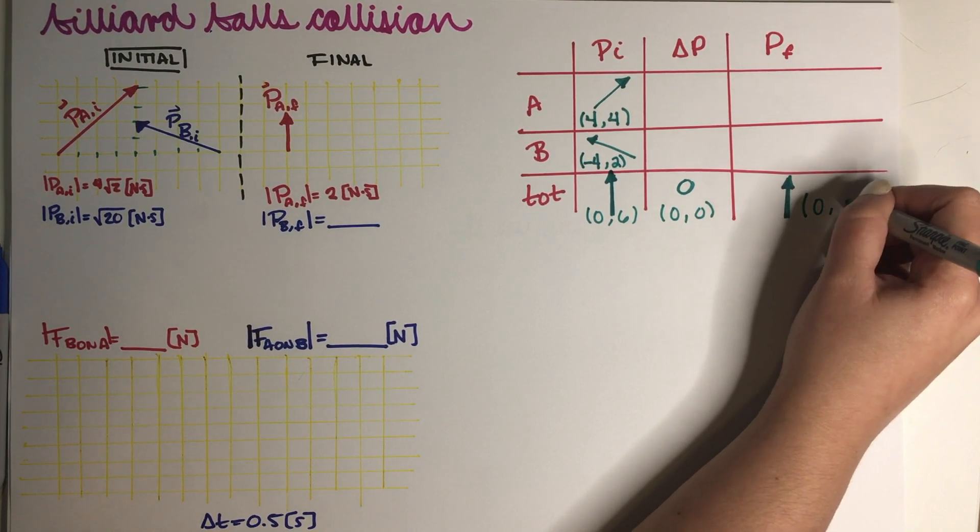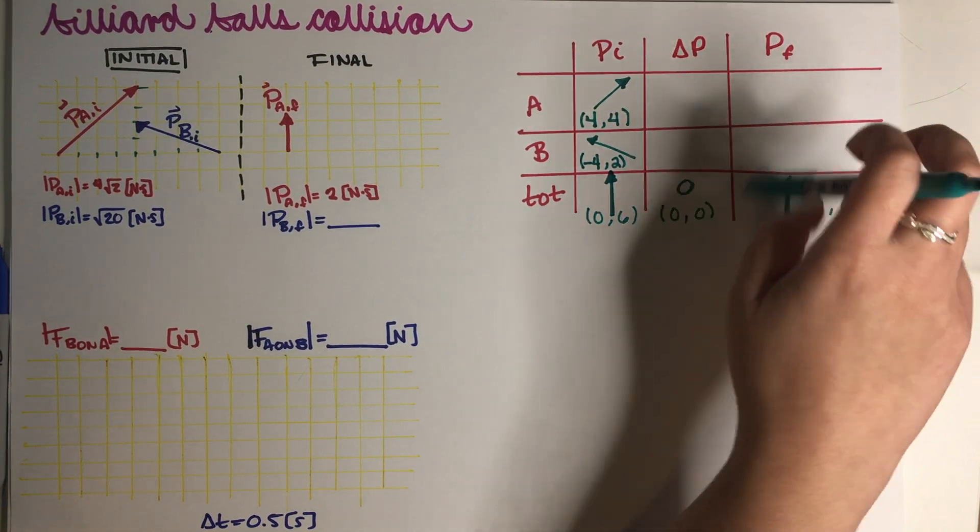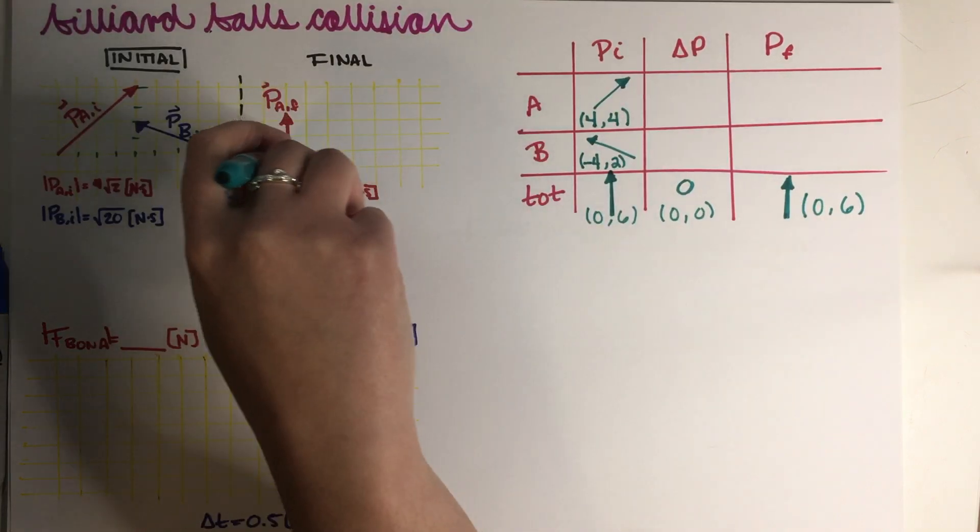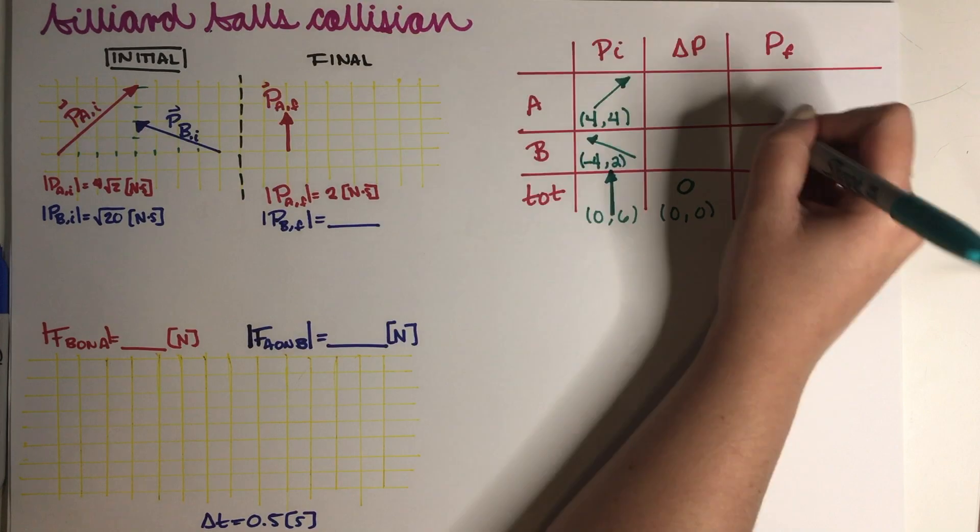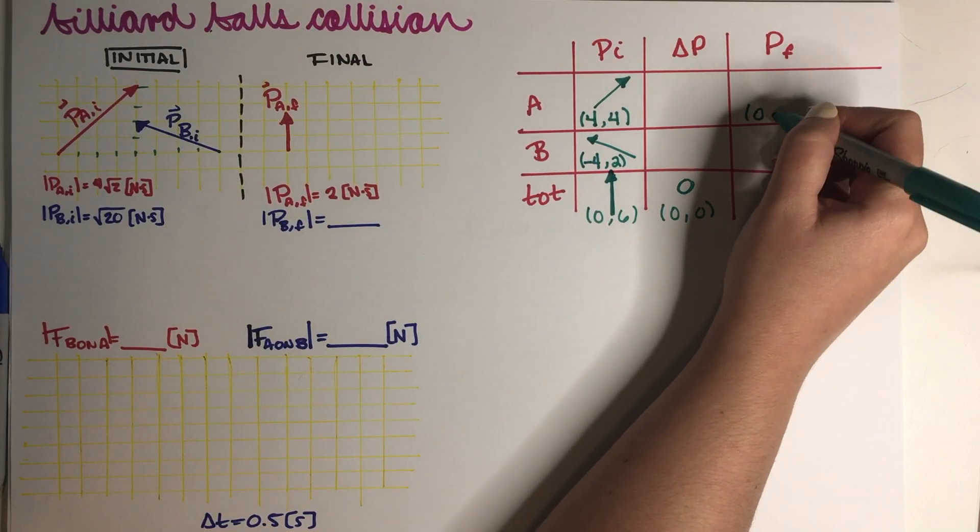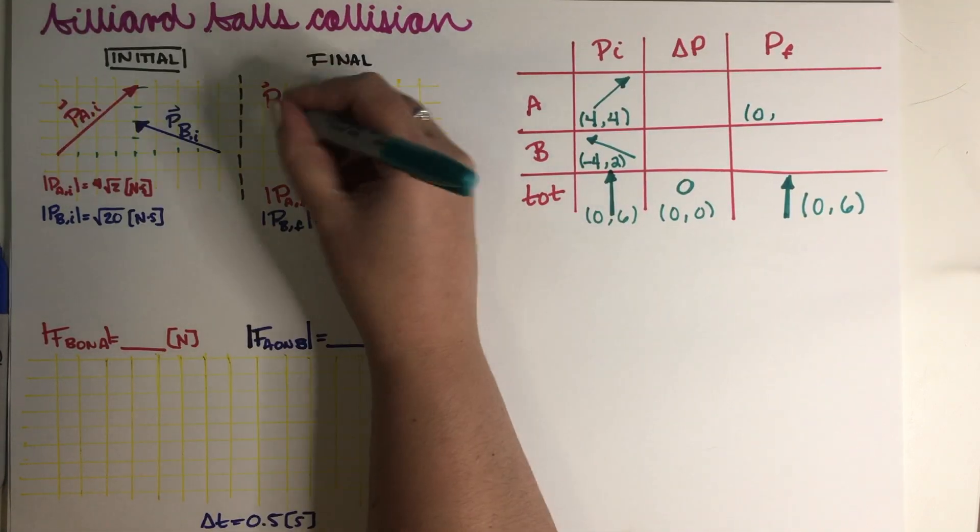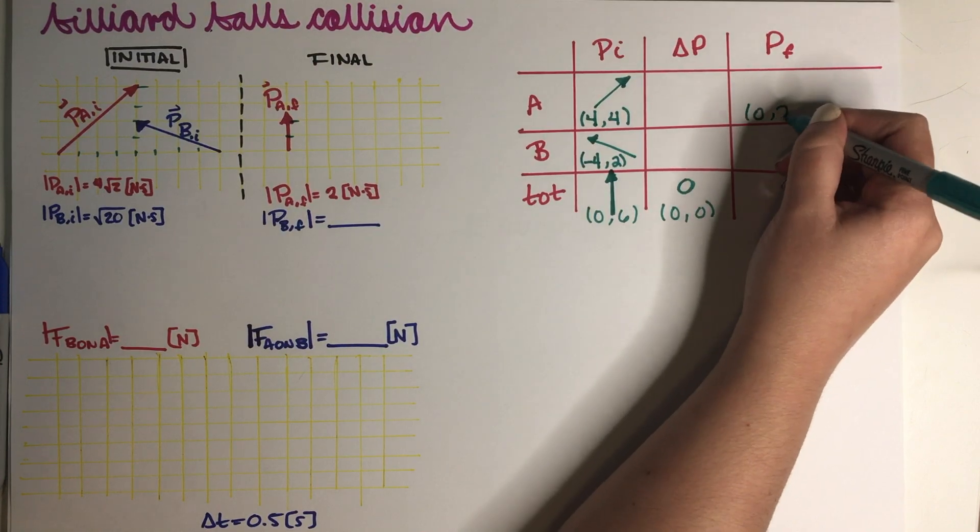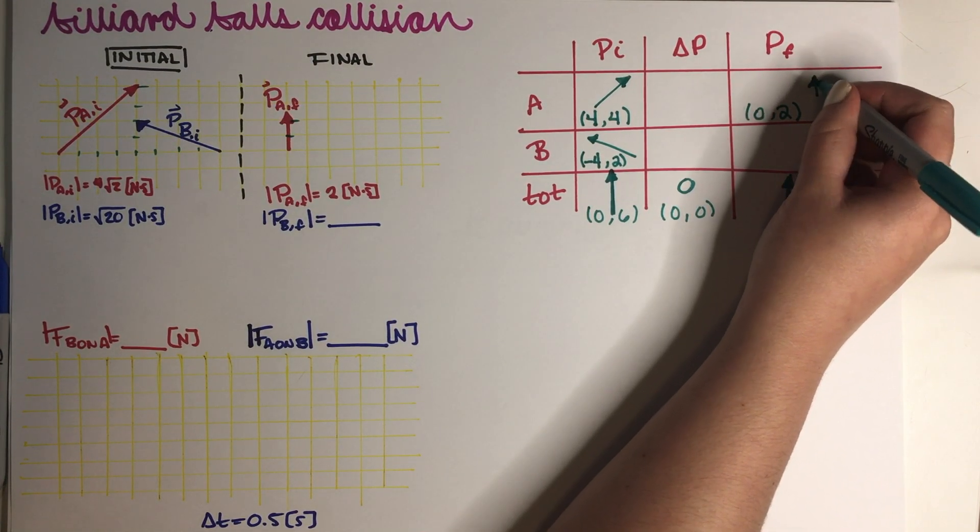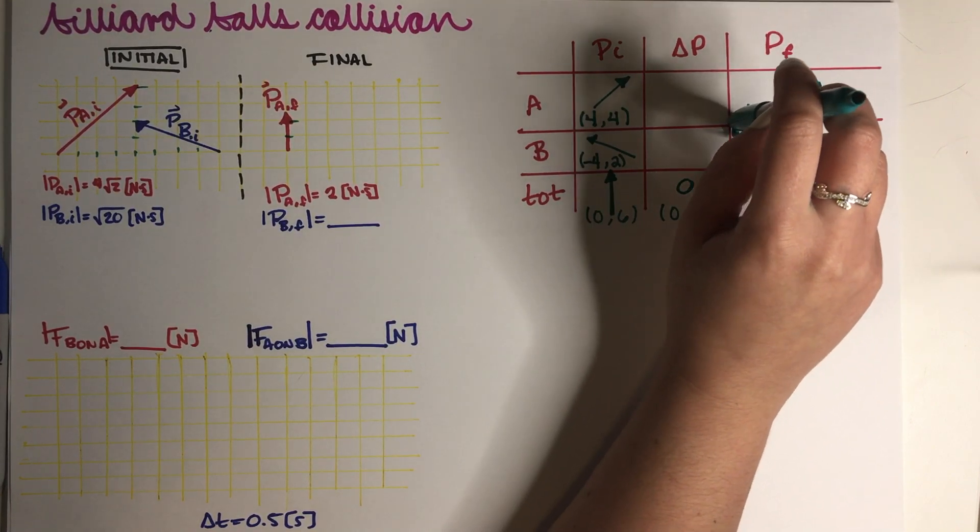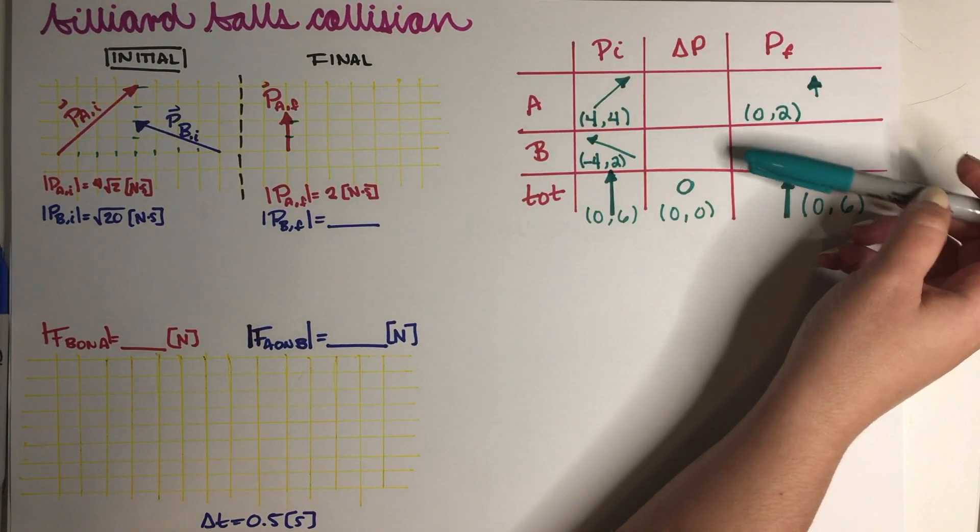So this is also 0 and 6. Now we do have the final momentum of A. So the final momentum of A is 0 in x. And just one, two ticks going up like this.